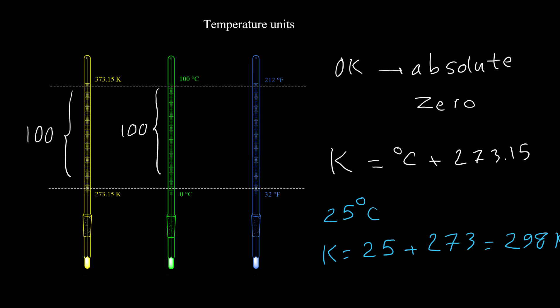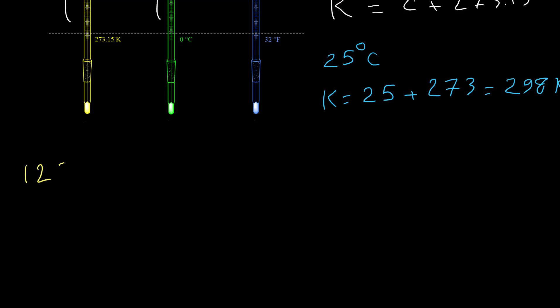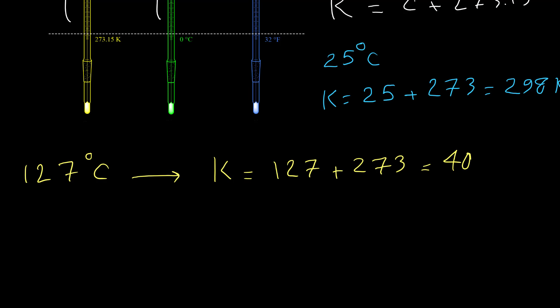Keep in mind that for Kelvin we don't use the degree sign. Another example: convert 127°C to Kelvin. The Kelvin temperature is 127 + 273 = 400 Kelvin.